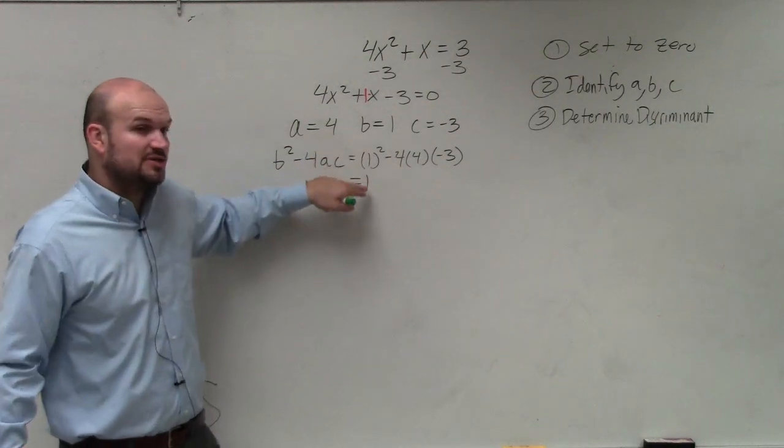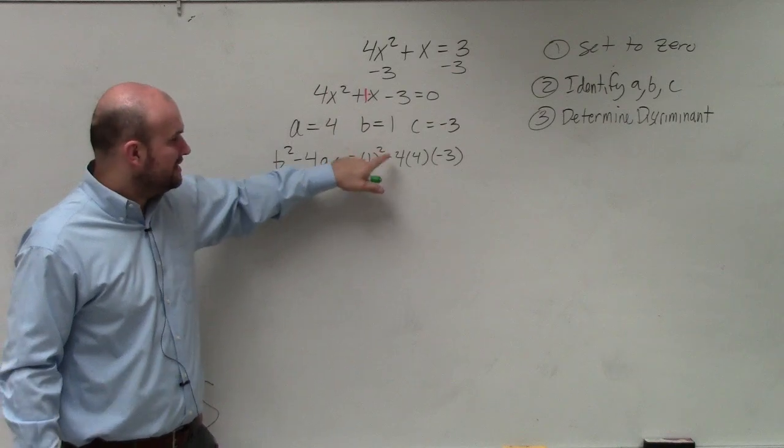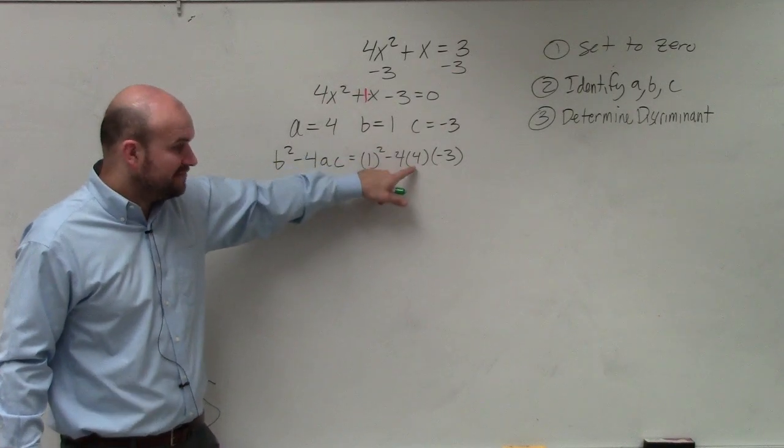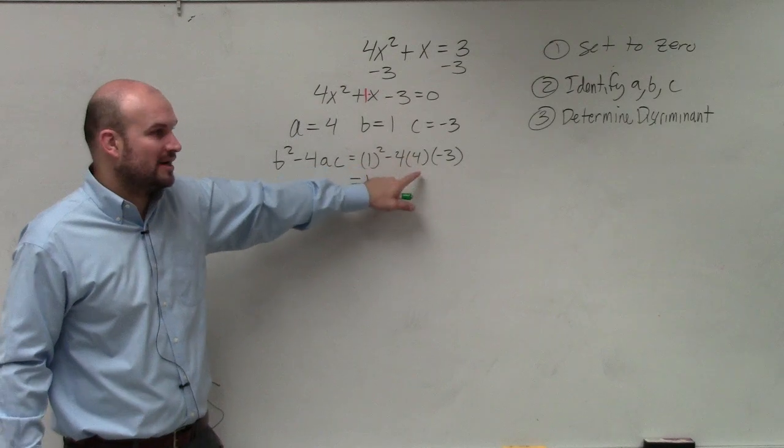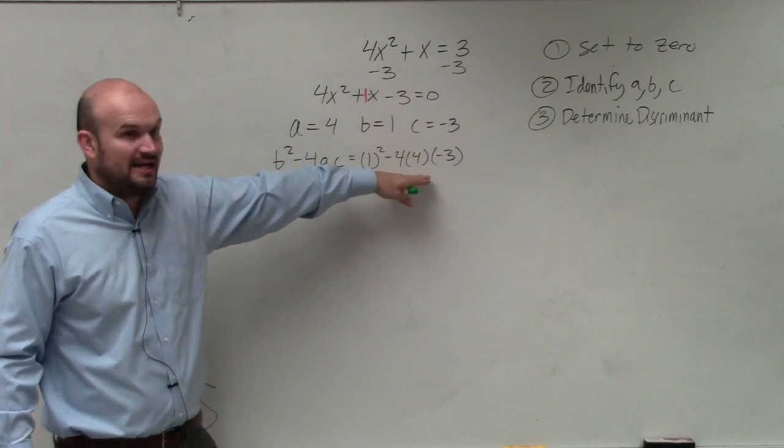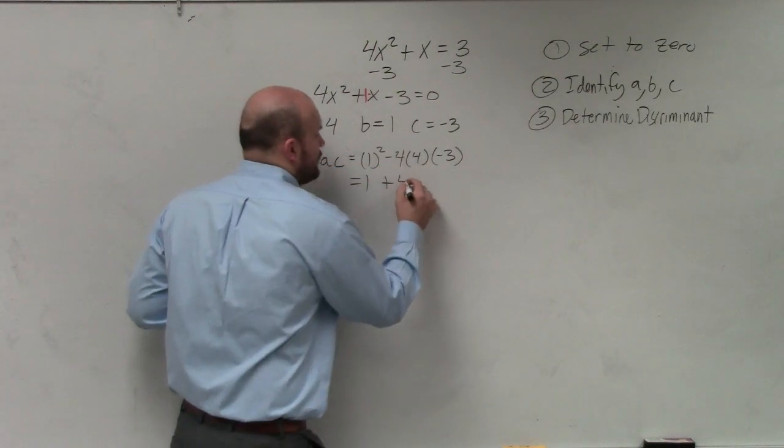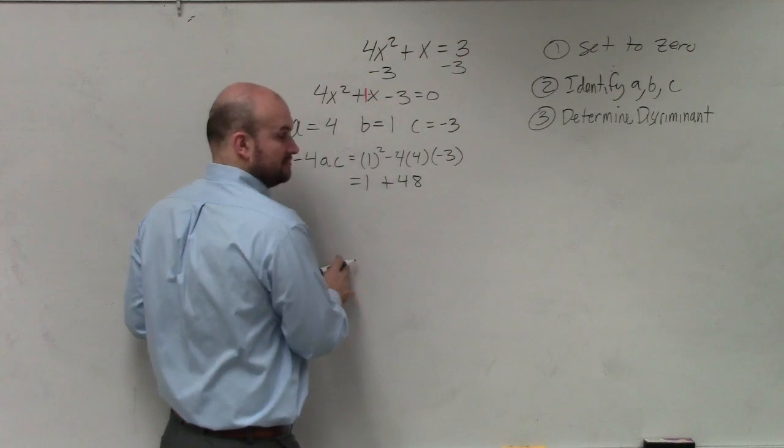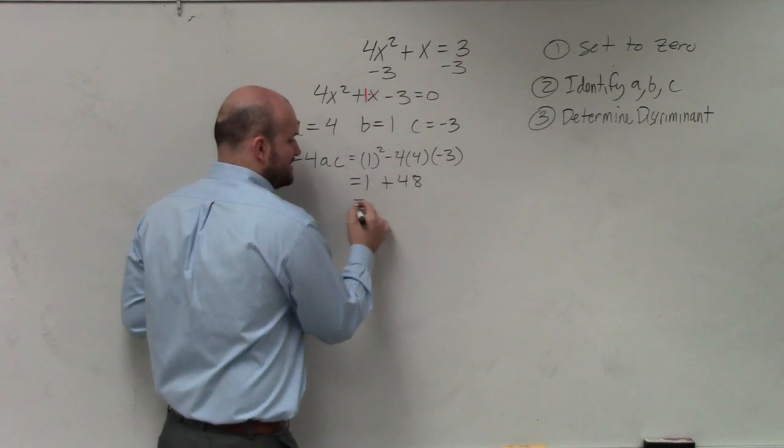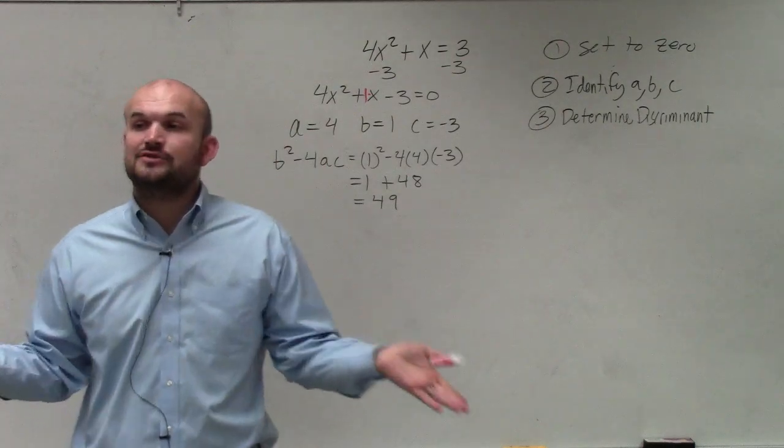So 1 squared is 1. Let's do this step by step, because here's where students make mistakes. Negative 4 times positive 4 is negative 16 times negative 3 is going to be positive 48. 1 plus 48 is 49. Is 49 a square number?